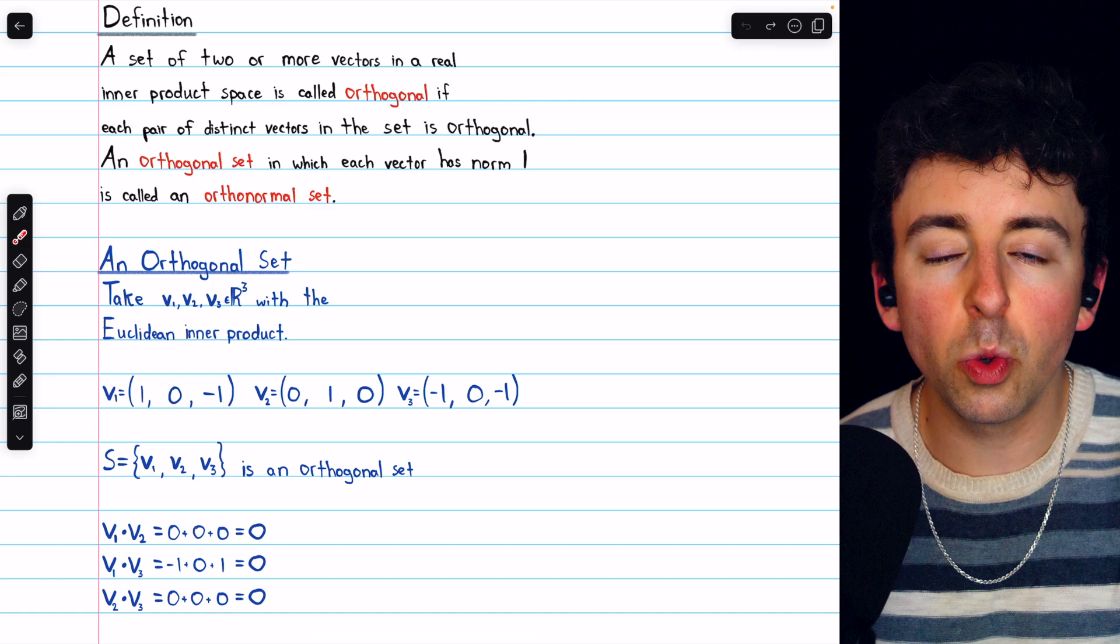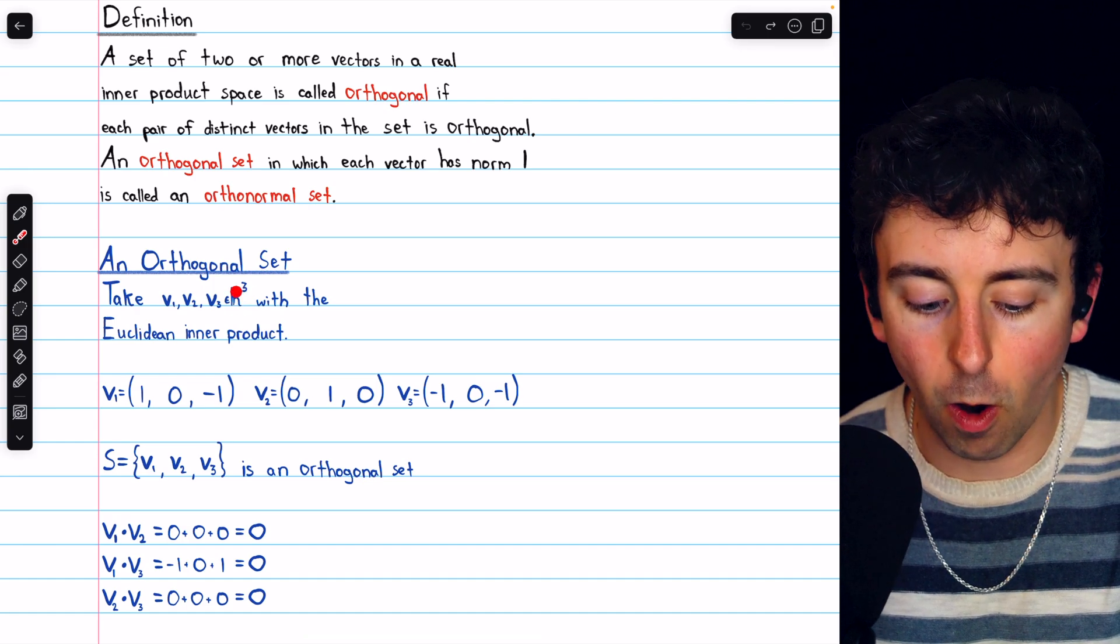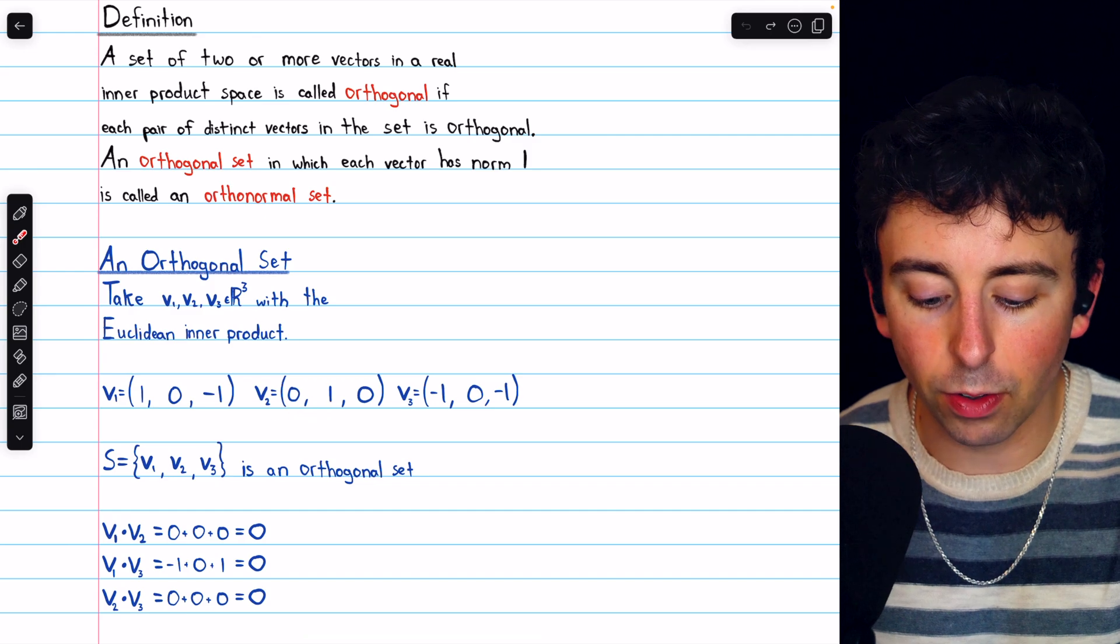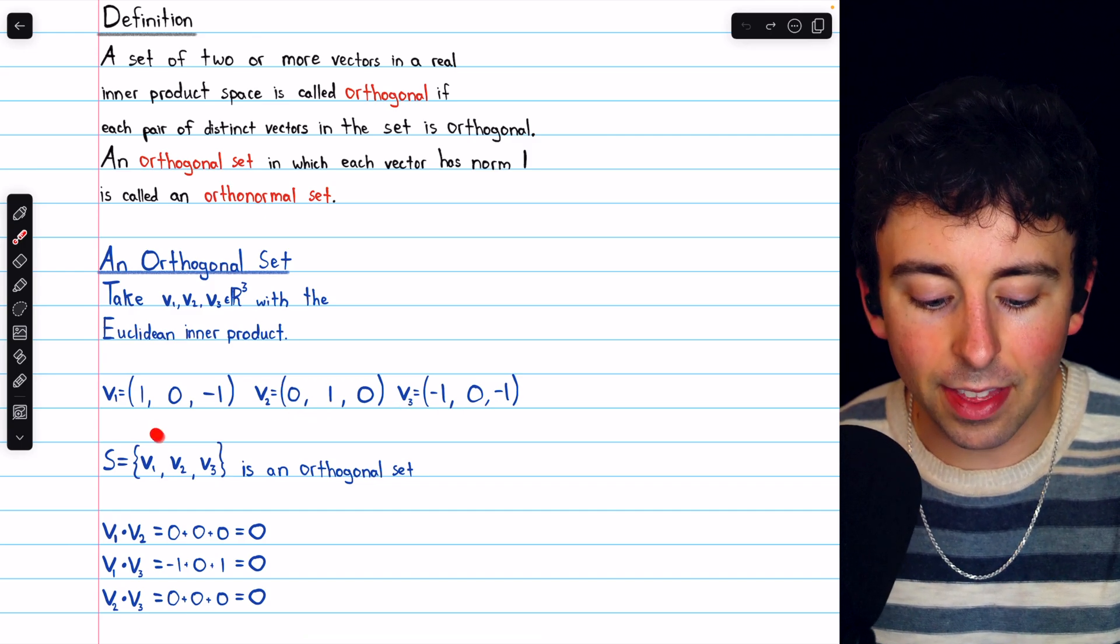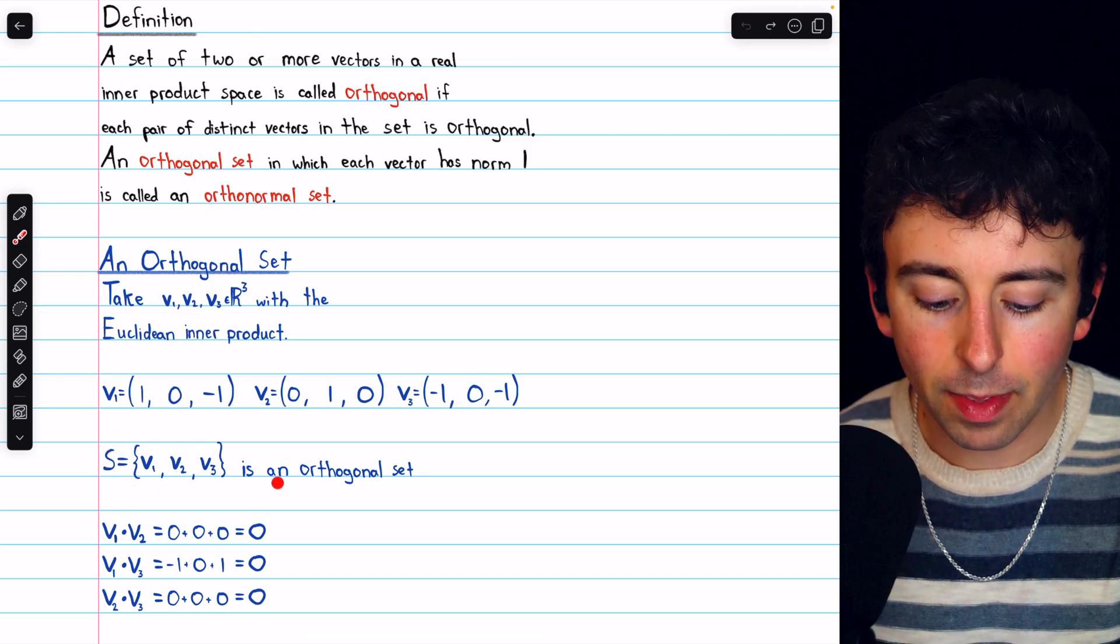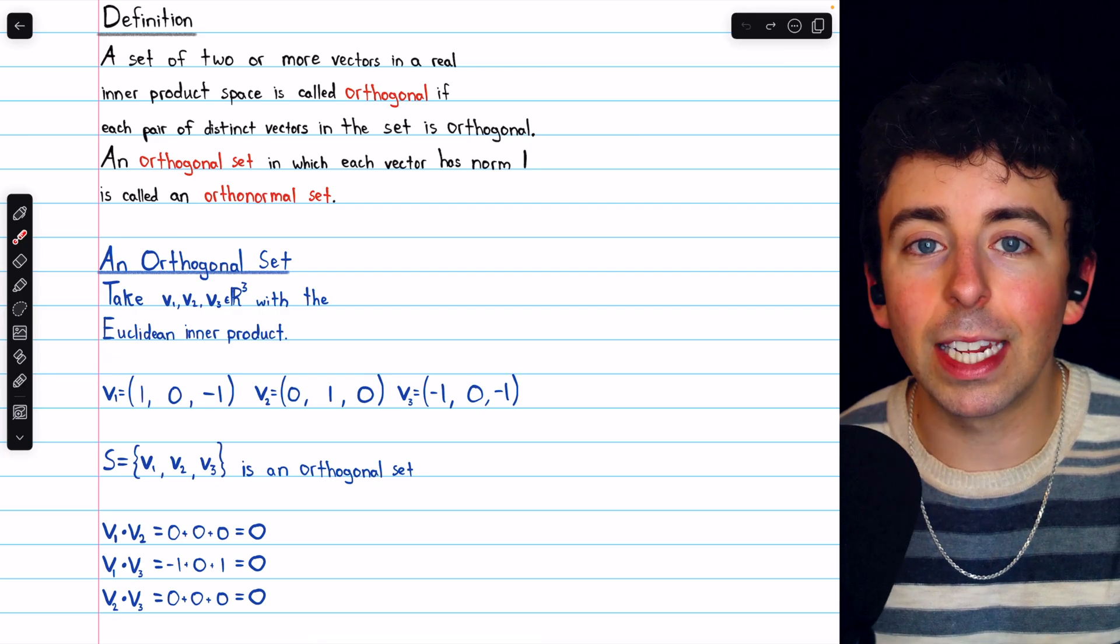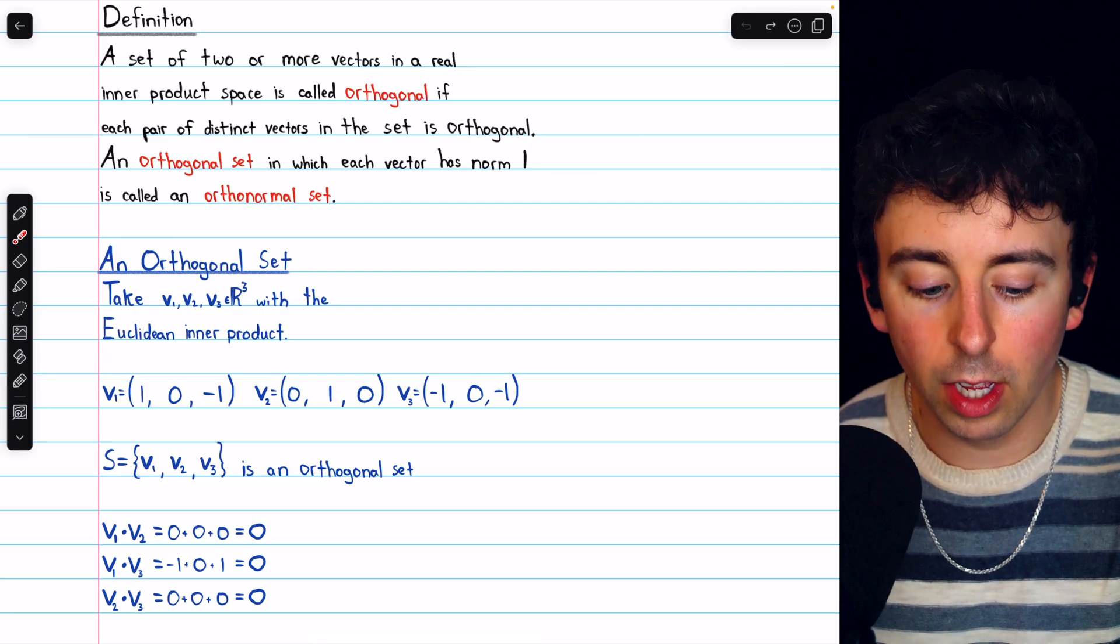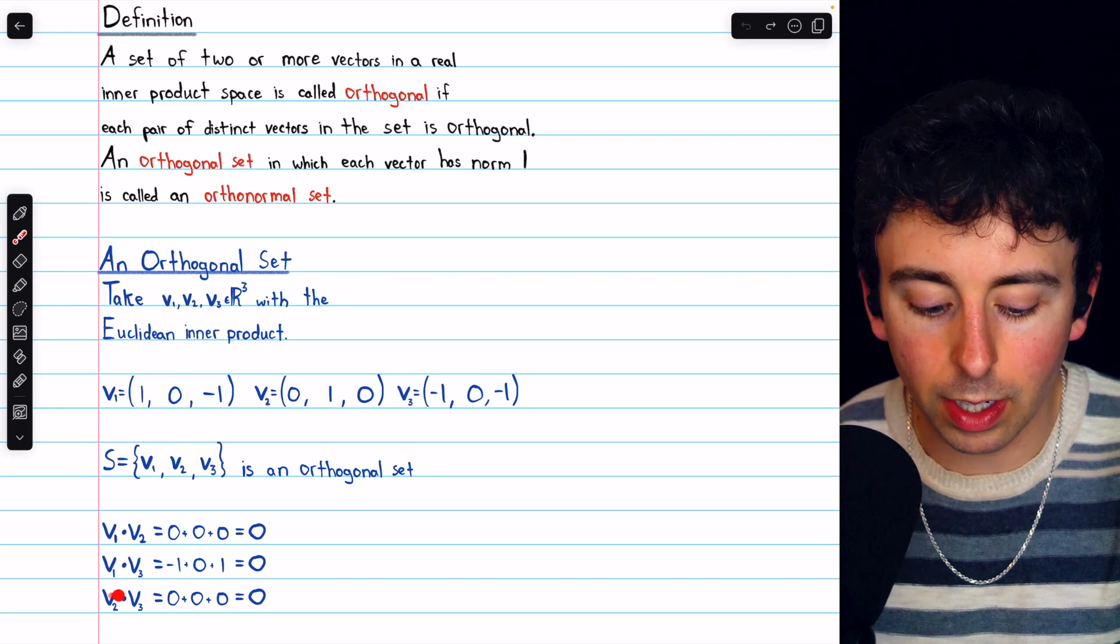Here's an example in the familiar Euclidean inner product space R cubed. Let's take these three vectors V1, V2, and V3. Then this set S that contains them is an orthogonal set, meaning that every pair of distinct vectors in the set is orthogonal.